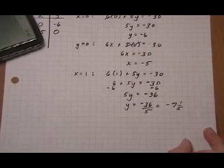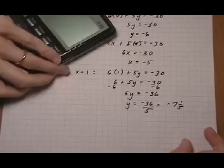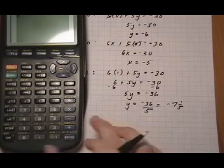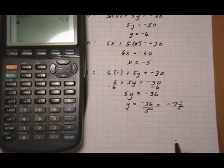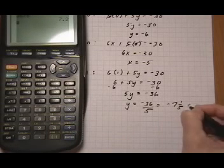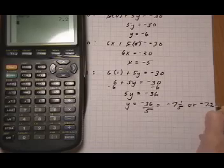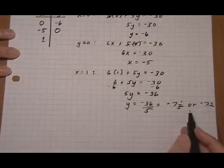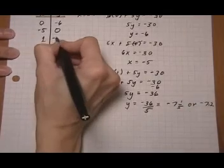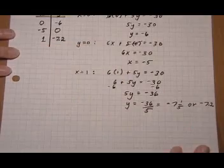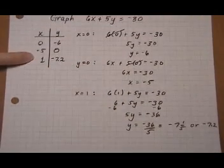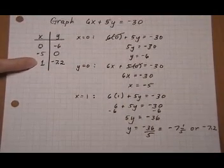So minus seven and a fifth. The other thing you can do, if you prefer, is take out your trusty calculator. 36 over 5, seven point two. So either way, fractions or decimals, that will give us our next point. So minus 7.2 will be our third ordered pair up here. When x is one, y is minus 7.2.